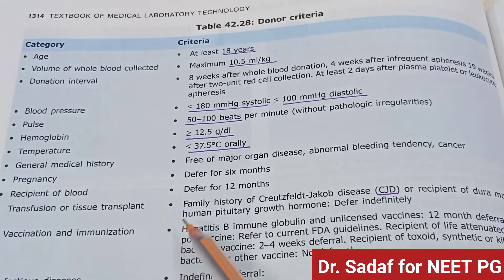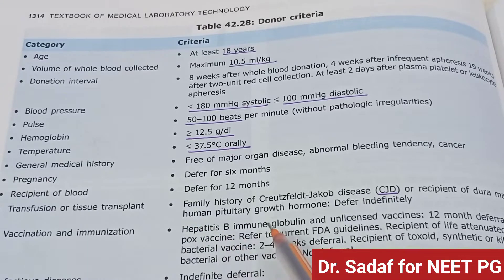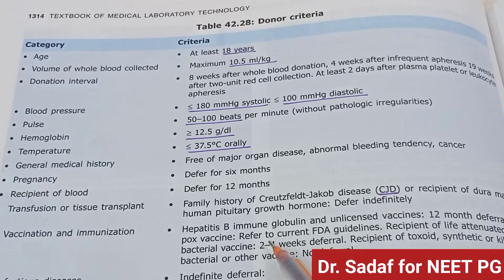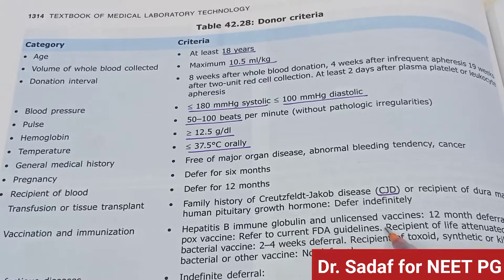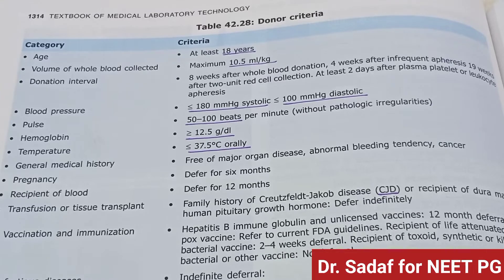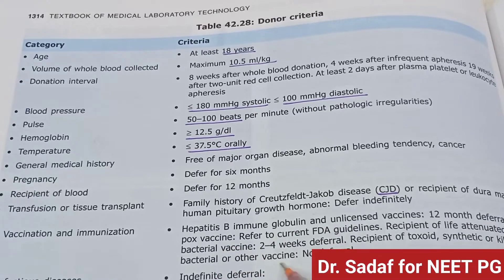Vaccination and immunization criteria: Hepatitis B immune globulin and unlicensed vaccine — 12-month deferral. Smallpox vaccine — refer to current FDA guidelines. Recipients of live attenuated viral or bacterial vaccine — 2 to 4 week deferral. Recipients of inactivated, synthetic, or killed viral, bacterial, and other vaccines — no deferral required.